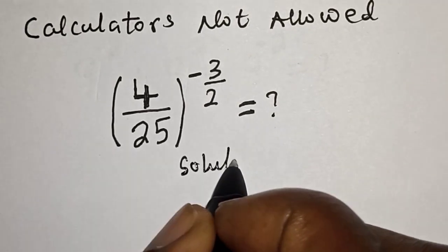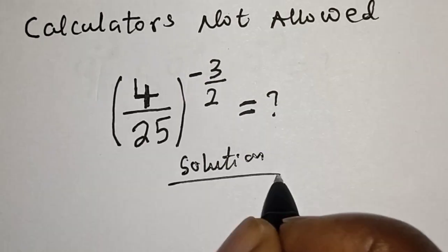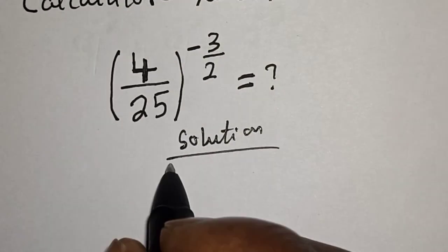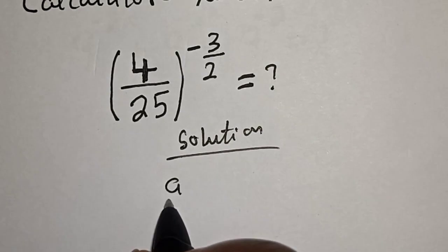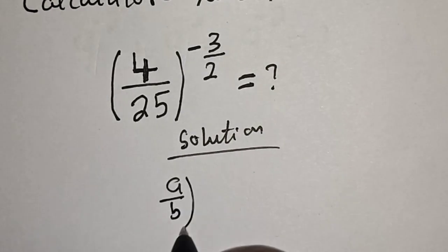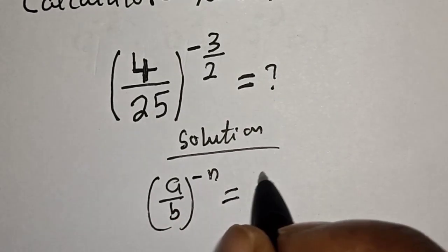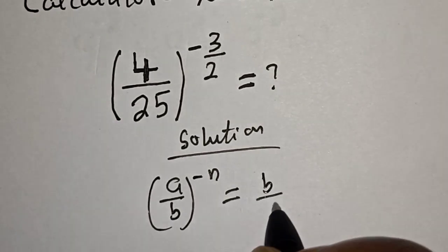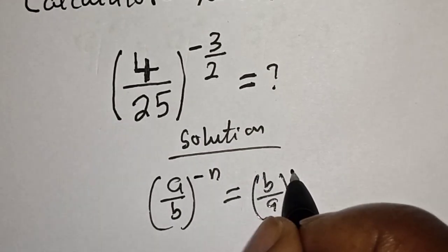Solution. If you have a over b to the power of minus n, this is equal to b over a to the power of n.